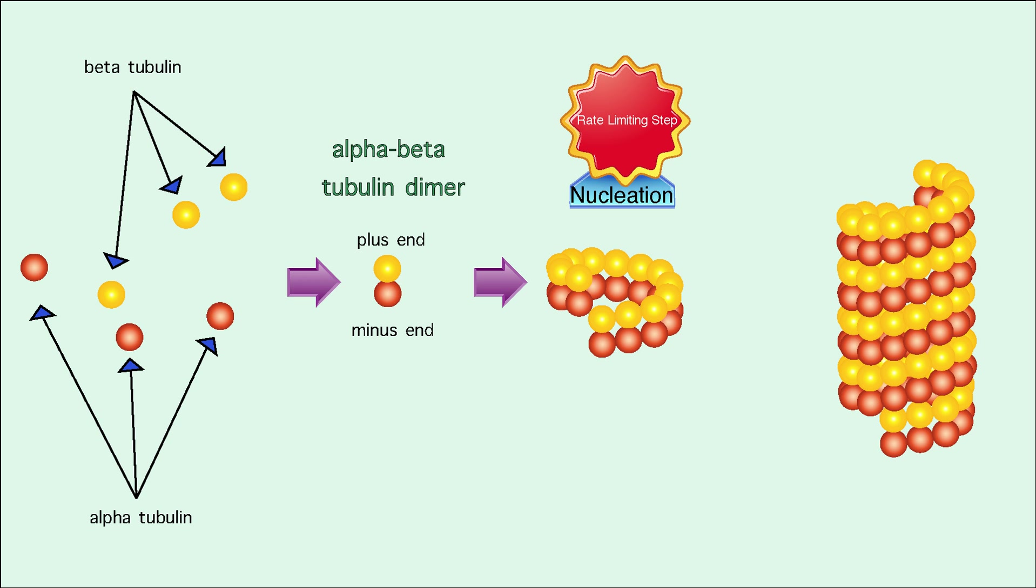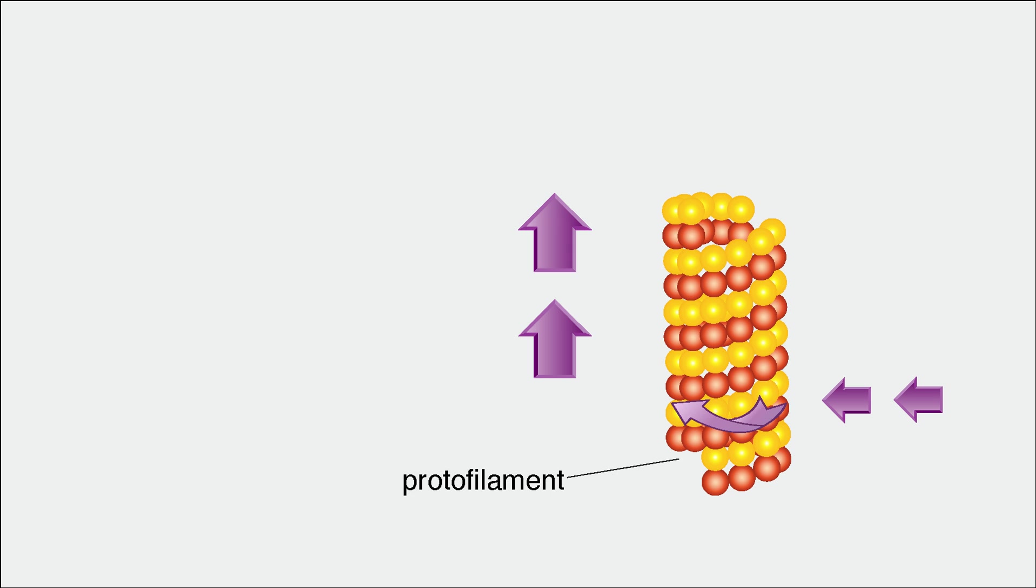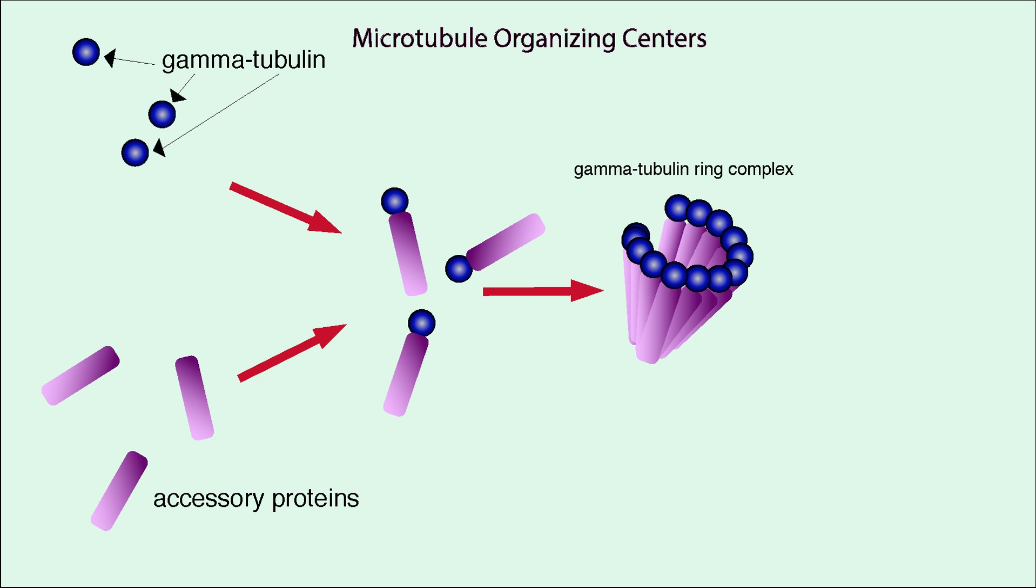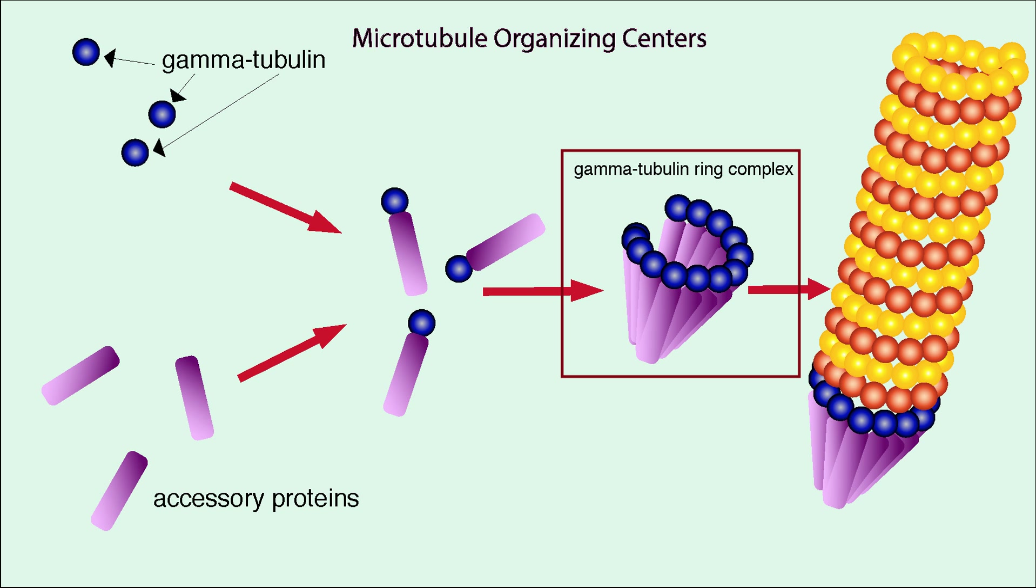Several dimers assemble into rings. And rings grow in a spiral, eventually forming long, hollow filaments. On its own, microtubule assembly occurs very slowly. So most microtubules originate from microtubule organizing centers. These centers contain gamma tubulin ring complexes, which bypass nucleation to speed up assembly.